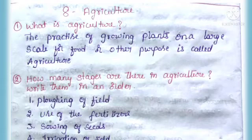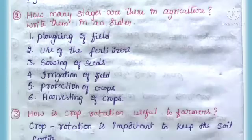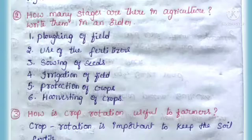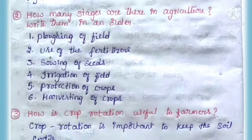Answer: The stages of agriculture in order are — plowing of field, use of fertilizers, sowing of seeds, irrigation of field, production of crops, and harvesting of crops.